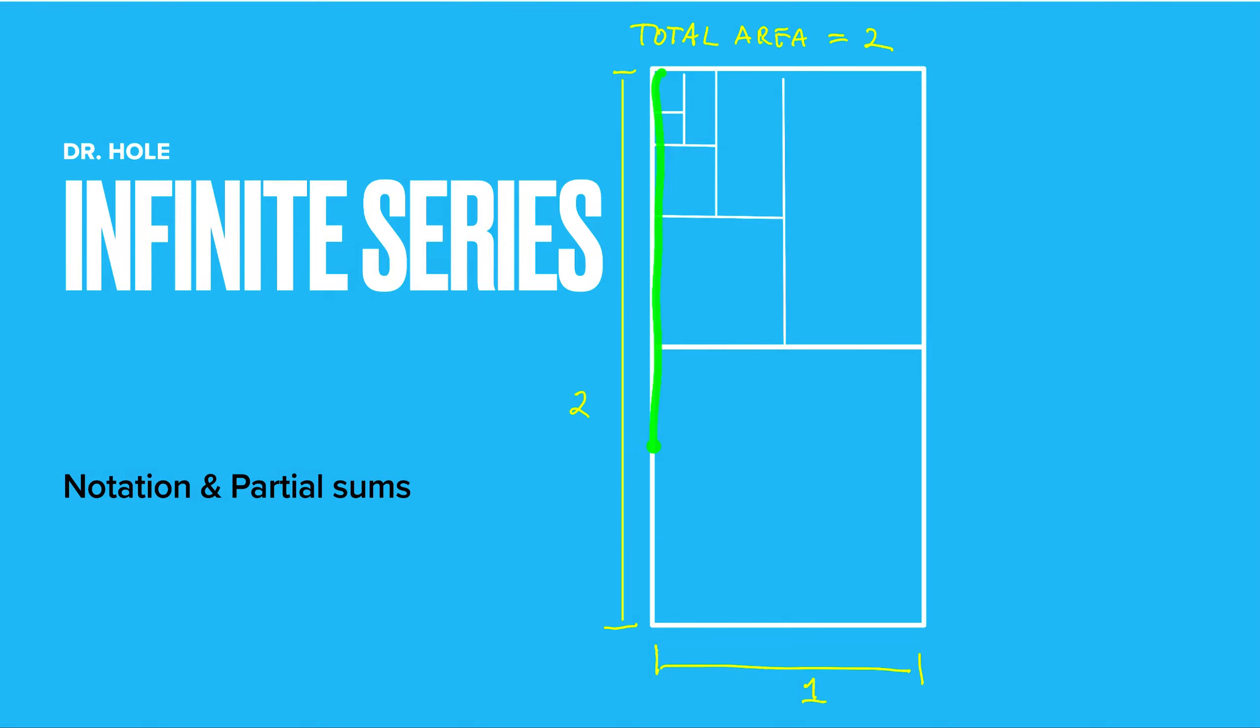Let's take this rectangle. Suppose that its base is 1 and its height is 2. Then the area enclosed by the rectangle is 2 square units. Now divide that total area in half and shade one of the two. Then you have an area of 1 remaining.